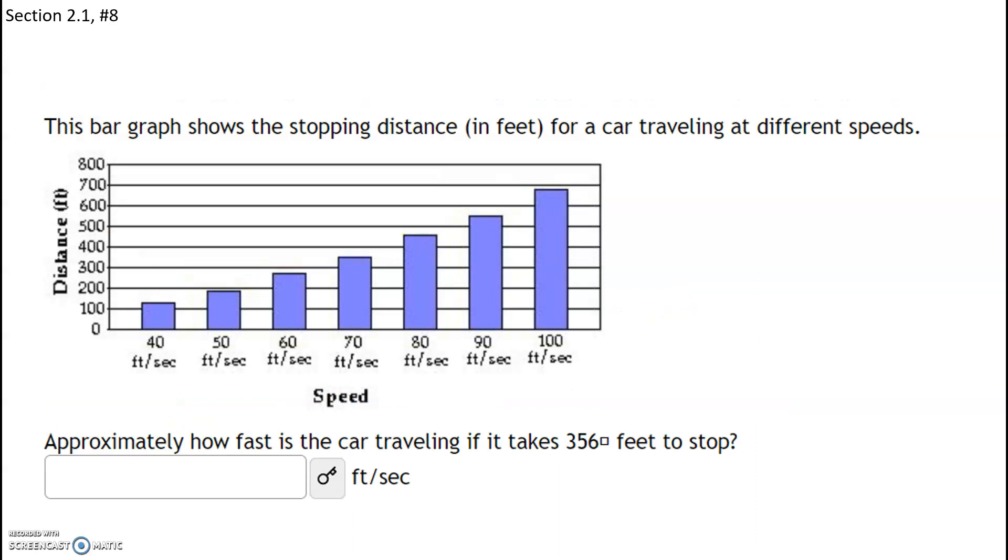This bar graph shows the stopping distance in feet of a car traveling at different speeds. Approximately how fast is a car traveling if it takes 356 feet to stop? The x-axis represents speed, that's what we're looking for. The distance that it takes to stop is given by the y-axis. So on the y-axis, I want to locate 356.